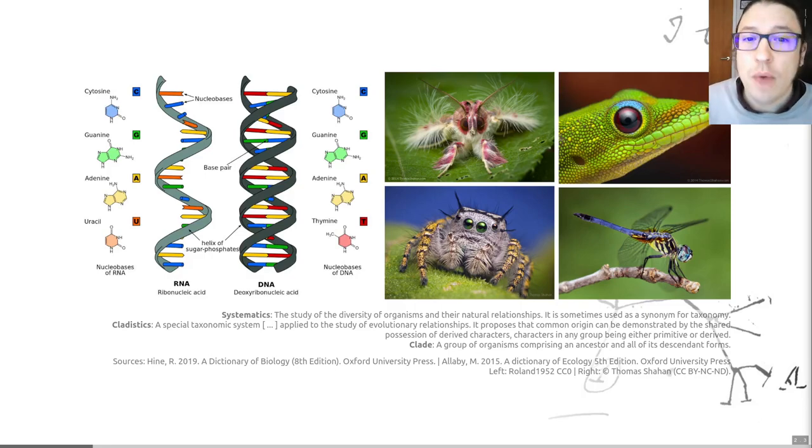The chief way, nowadays, by which systematics is driven forward is using cladistics. There's a definition of this on the slide. Cladistics is a special taxonomic system applied to the study of evolutionary relationships. It proposes that common origin can be demonstrated by the shared possession of derived characters. Characters in any group can be either primitive, not a word we tend to use anymore, we'll learn the proper word for that later on in this series of videos, or derived.